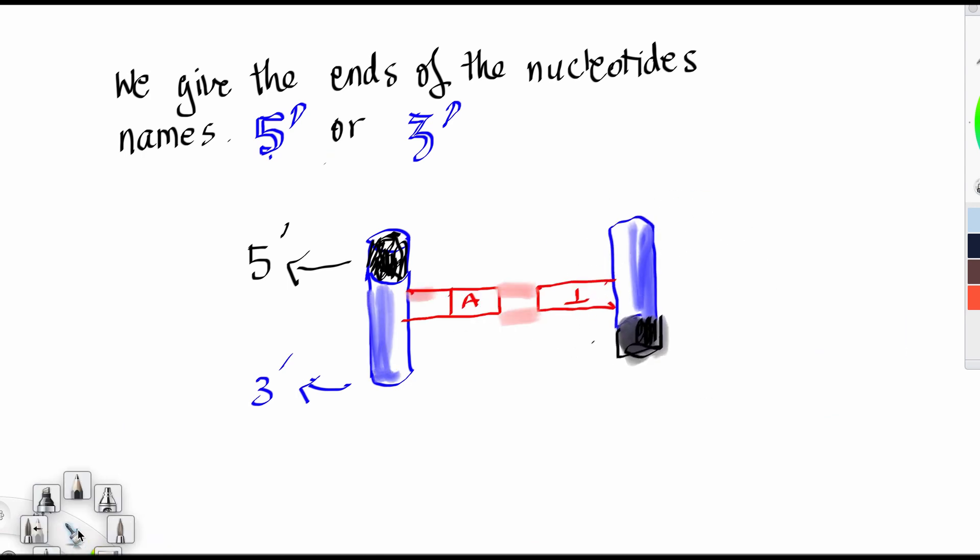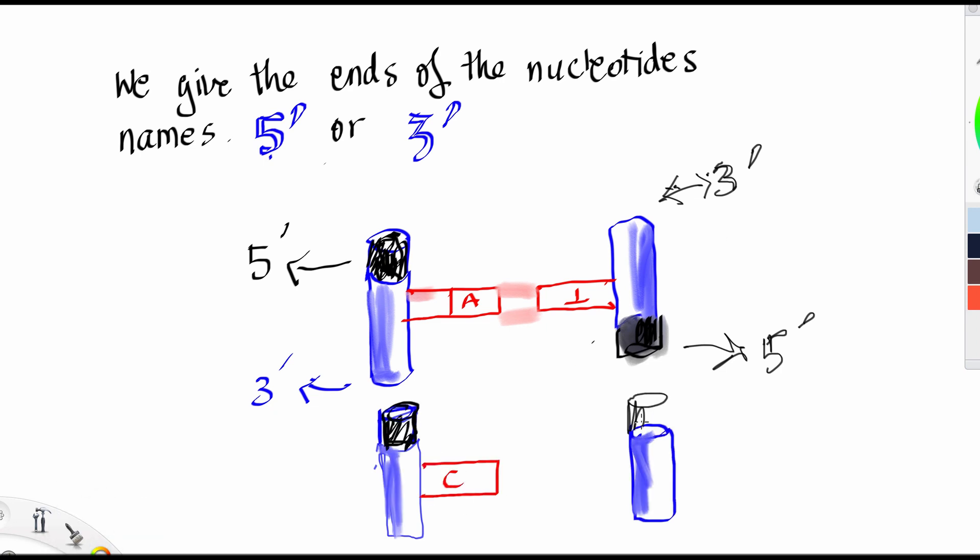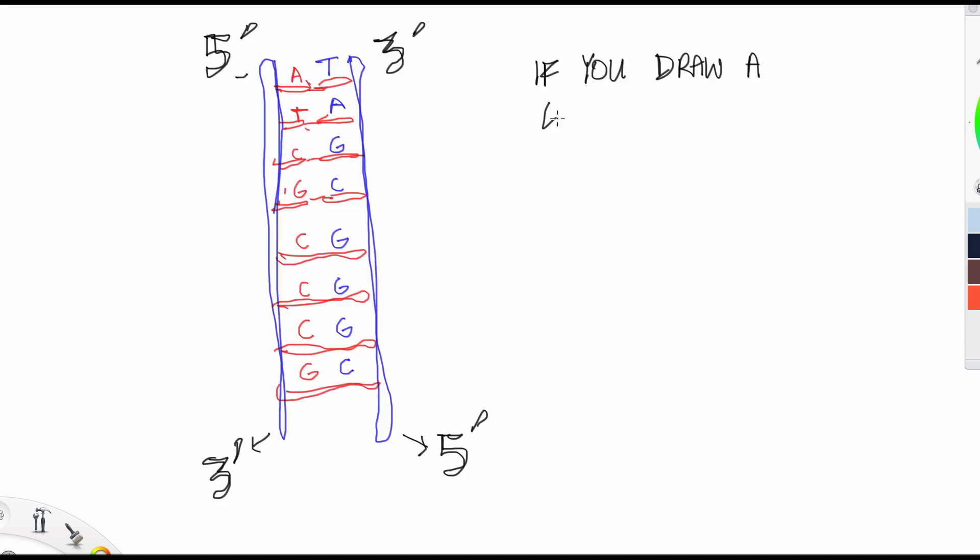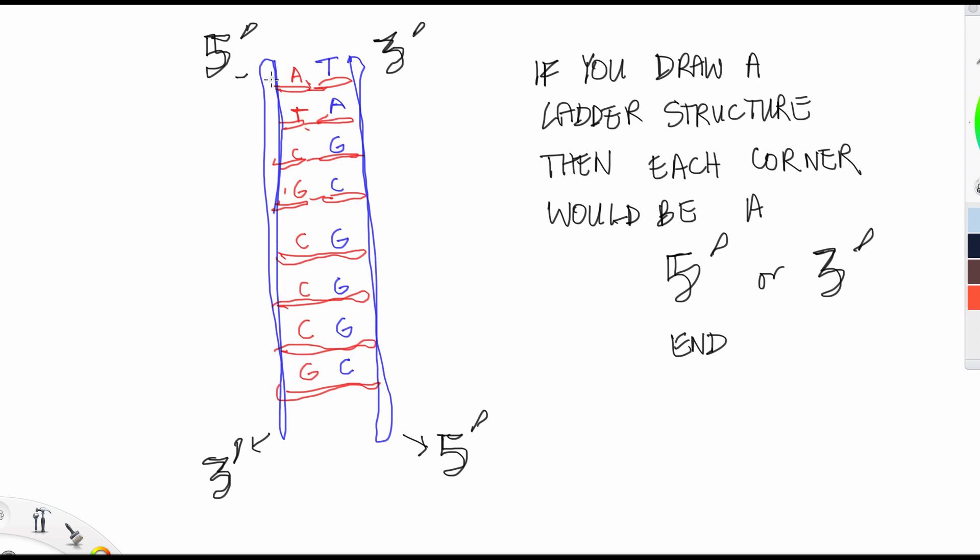5' refers to the phosphate end, and the 3' refers to the sugar end. In fact, when you put any number of nucleotides together to make a DNA ladder structure, then each corner would be a 5' or a 3' end.